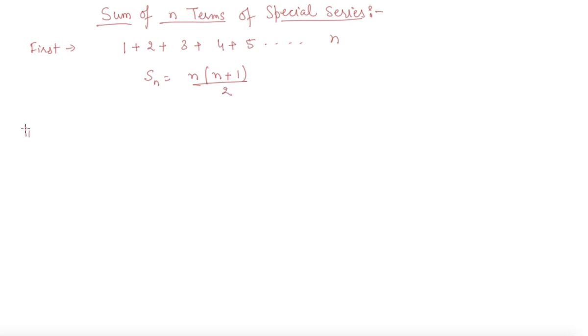So the second series that I am going to discuss now is S_n equals 1 square plus 2 square plus 3 square up to n square. This is the series and the formula for this series is S_n equals n into 2n plus 1 into n plus 1 by 6.